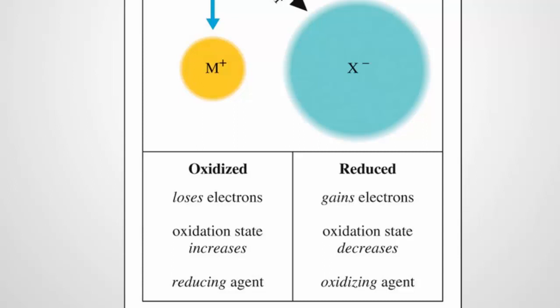Now something is reduced when it gains electrons. If it gains electrons, being negatively charged, it will become more negative. In other words, its oxidation state will decrease. It is called the oxidizing agent because it causes the other thing to be oxidized.